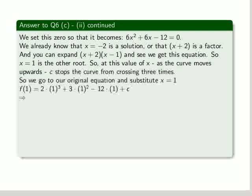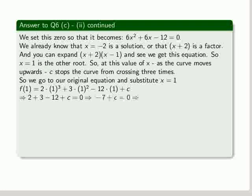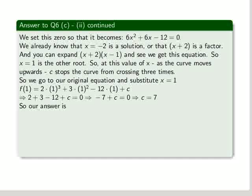But that doesn't prevent the fact that x equals 1 is the other root. So at this value of x, as the curve moves upwards, c stops the curve from crossing three times. So if we go to our original function and substitute x equals 1, which is probably the easiest substitution we can have, and we expand and simplify, we get that c equals 7.